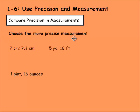First thing first, we're going to choose the more precise measurement. Here we have seven centimeters and then we have 7.3 centimeters. For the seven, there is no fraction of a centimeter, but this one gives us the fraction of a centimeter. It's more precise. There's more significant digits. So we would say that the 7.3 centimeter is the more precise measurement.